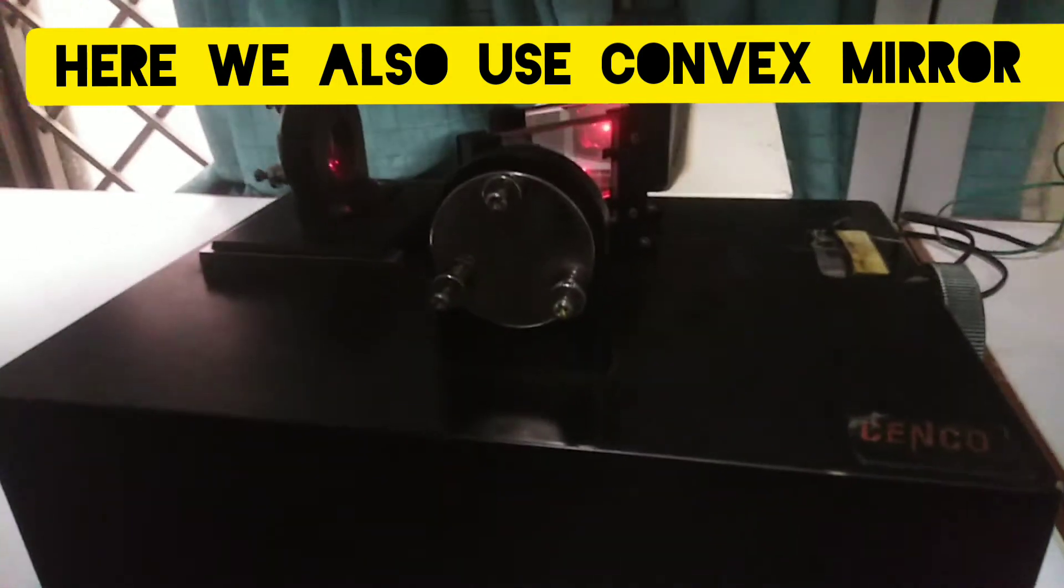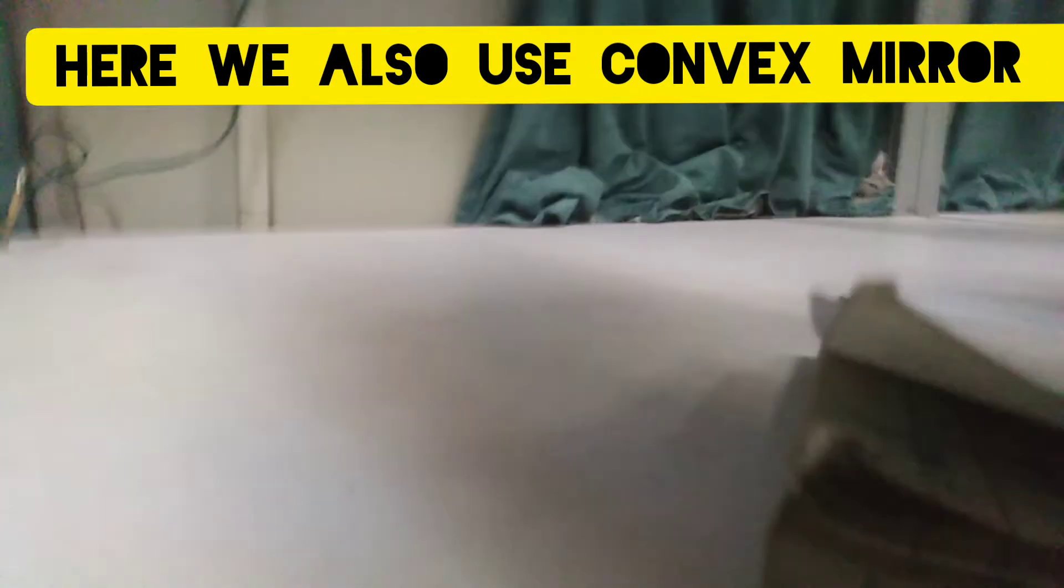The mirrors are arranged as shown in the experiment with a beam splitter inclined at 45 degrees to the mirrors. The laser light incidents on the beam splitter and is divided into two beams when it strikes the partially reflecting surface.